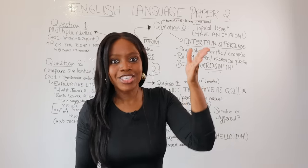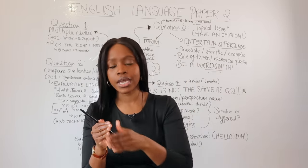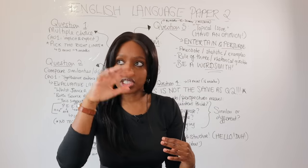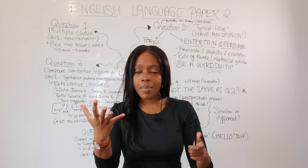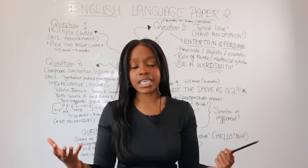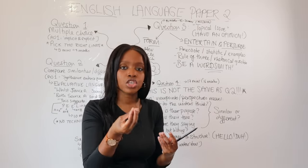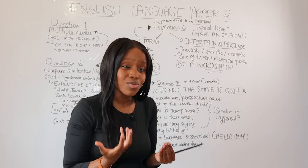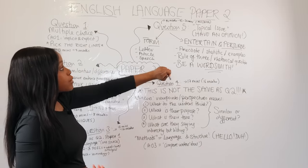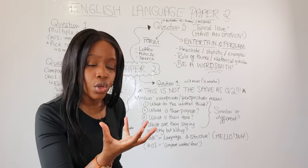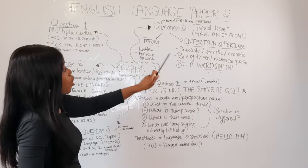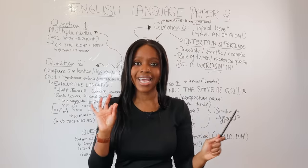Earlier in the year I did a question five series where I went through every single possible topic that could be tested and gave you essay plans — those videos are linked in the description. Think about and have an opinion on topical issues such as climate change, animal cruelty, social media, or technology. Try to anticipate them. It's actually easy to do really well on this question as long as you're able to have an opinion and write persuasively. This question also tests your awareness of form — you're either going to be asked to write a letter, article, or speech.